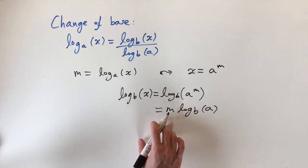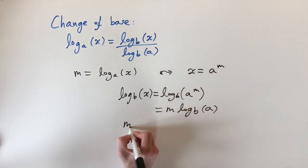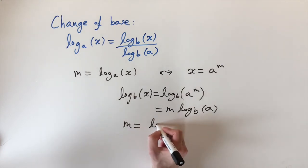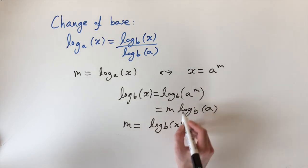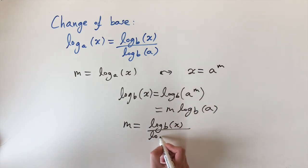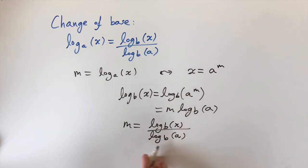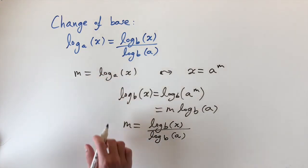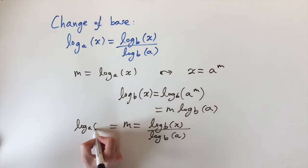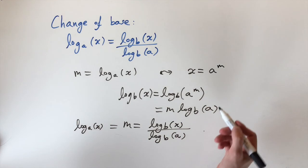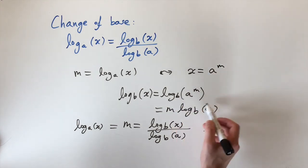Now we want to get our formula back in terms of m, so we rearrange by dividing both sides. This tells us that m equals log base b of x divided by log base b of a. And this is exactly what we wanted to show, because m was defined as log base a of x. So we've deduced the change of base formula using exponentials and the power law of logarithms.